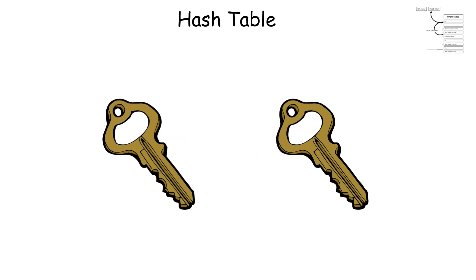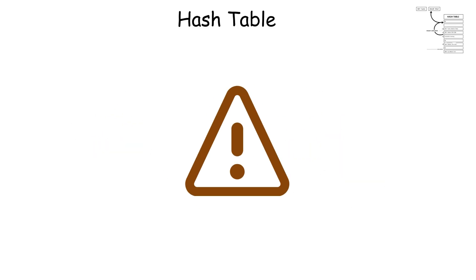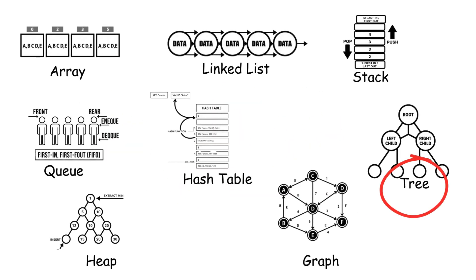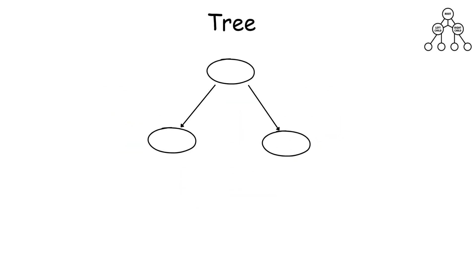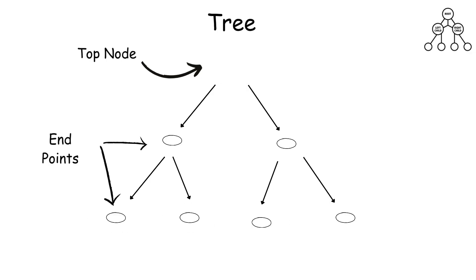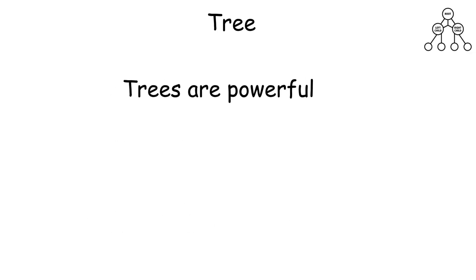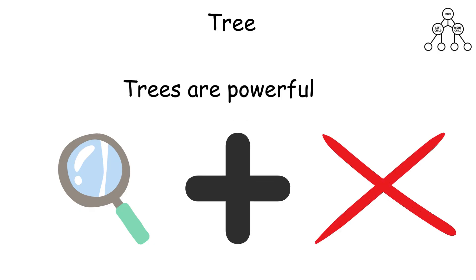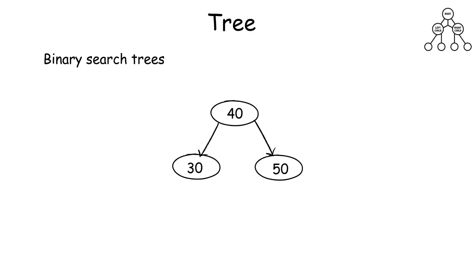Trees: A tree stores data in a hierarchy, like a family tree or a folder system. Each item called a node can have children. The top node is the root, and the leaves are the endpoints. Trees are powerful because they let you search, insert, and delete efficiently while keeping data sorted. Binary search trees, for example, divide the data so you can find items quickly, just like a guess-the-number game.